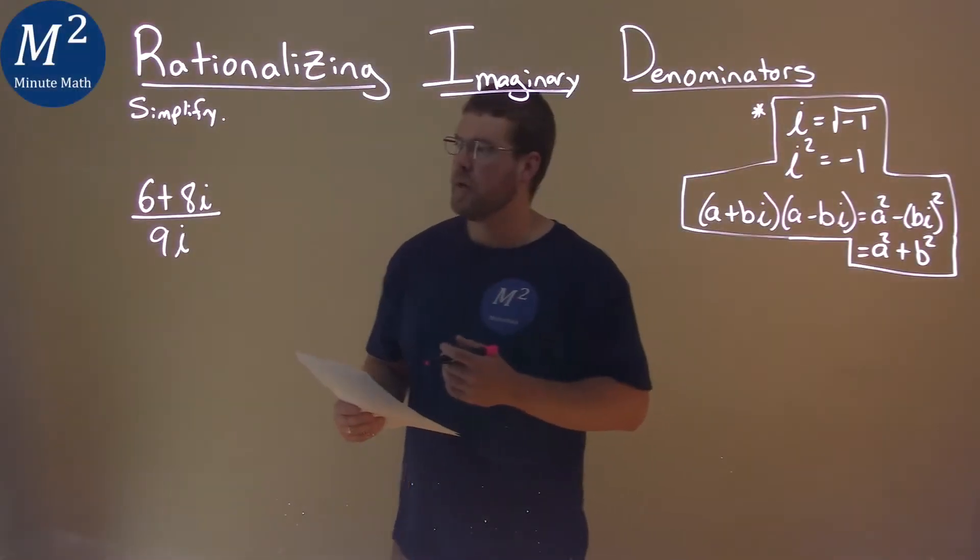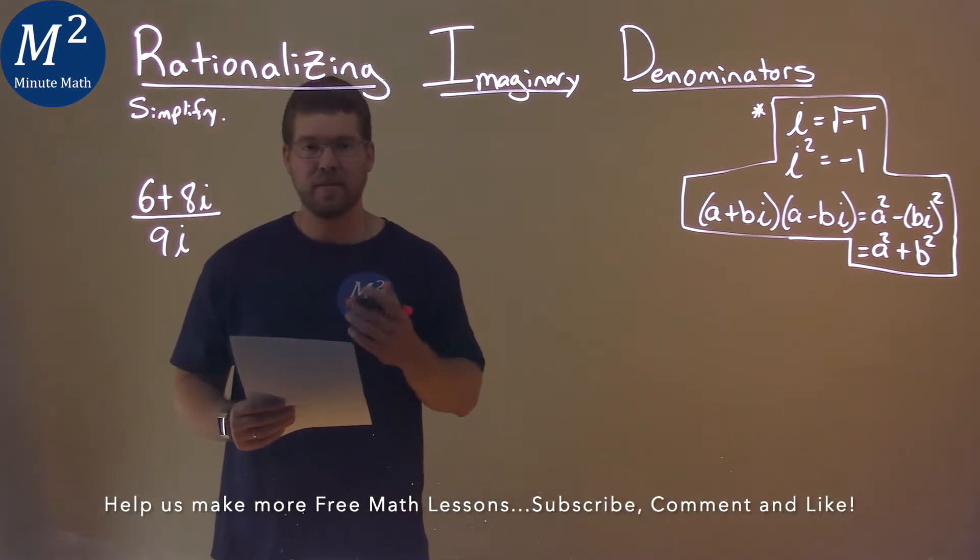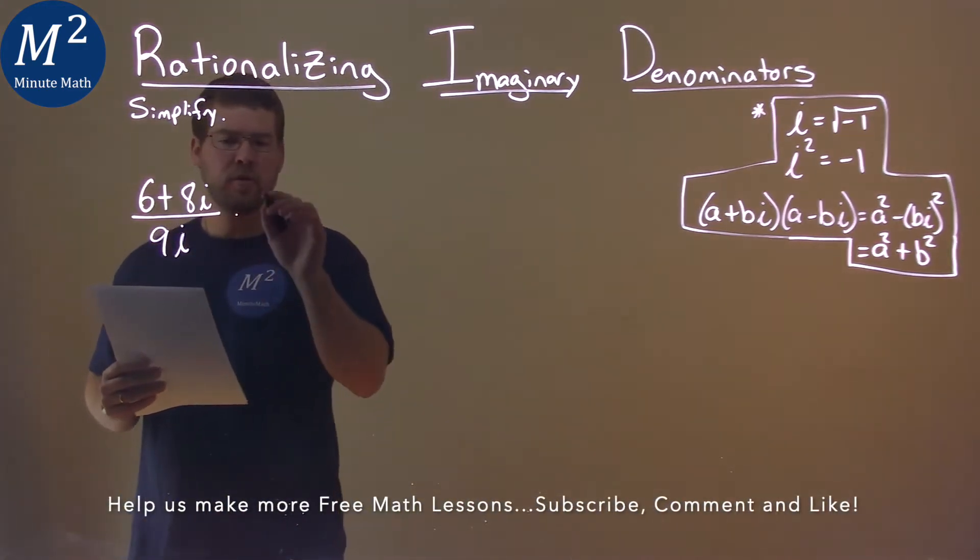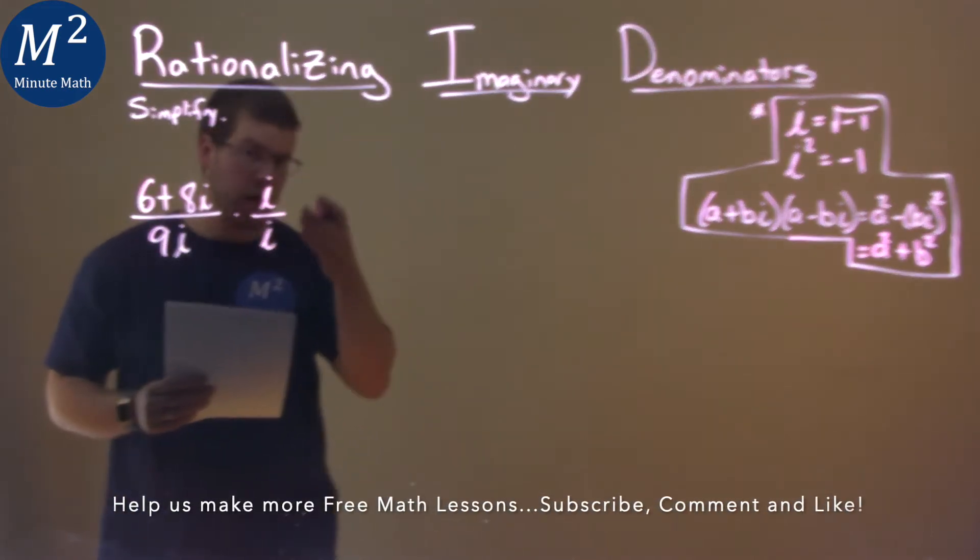We're given this problem right here: 6 plus 8i over 9i, and we've got to simplify. First thing I'm going to do is multiply the numerator by i and the denominator by i, or i over i.